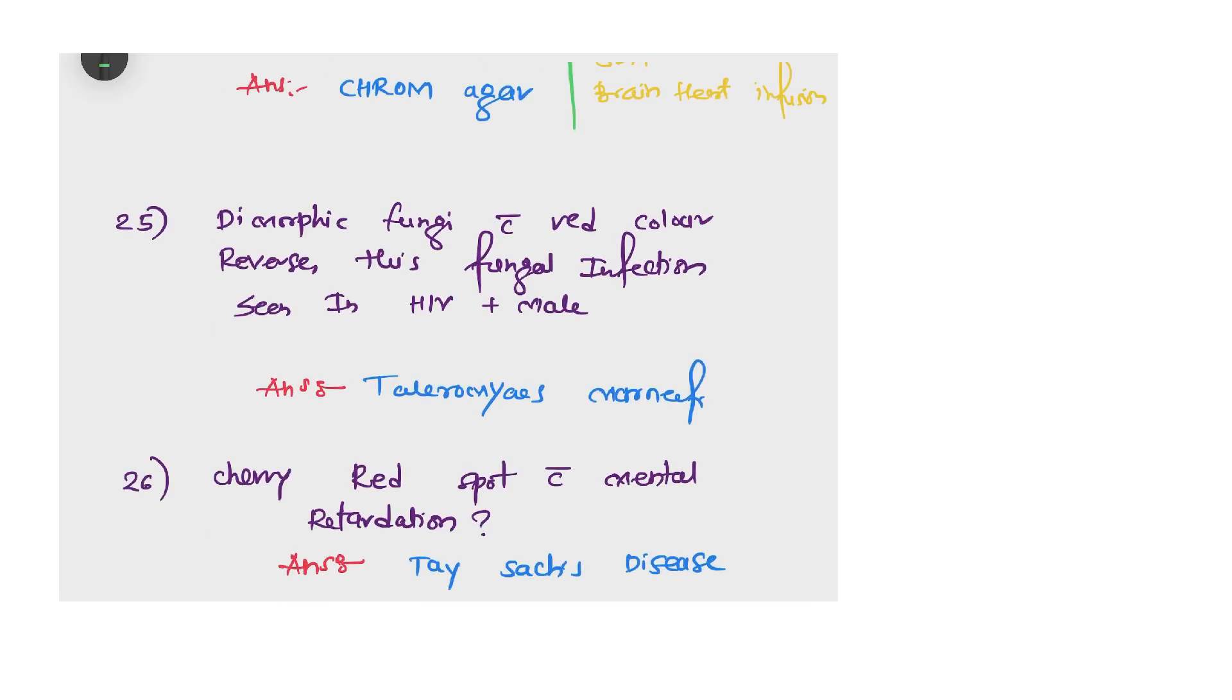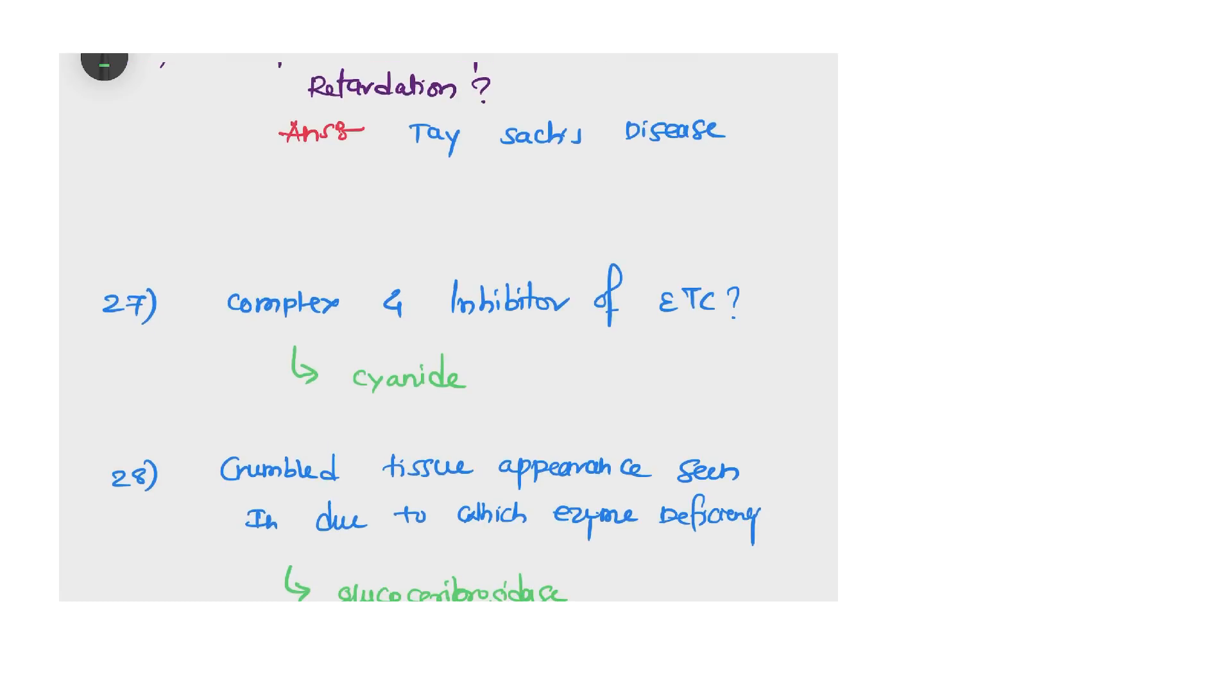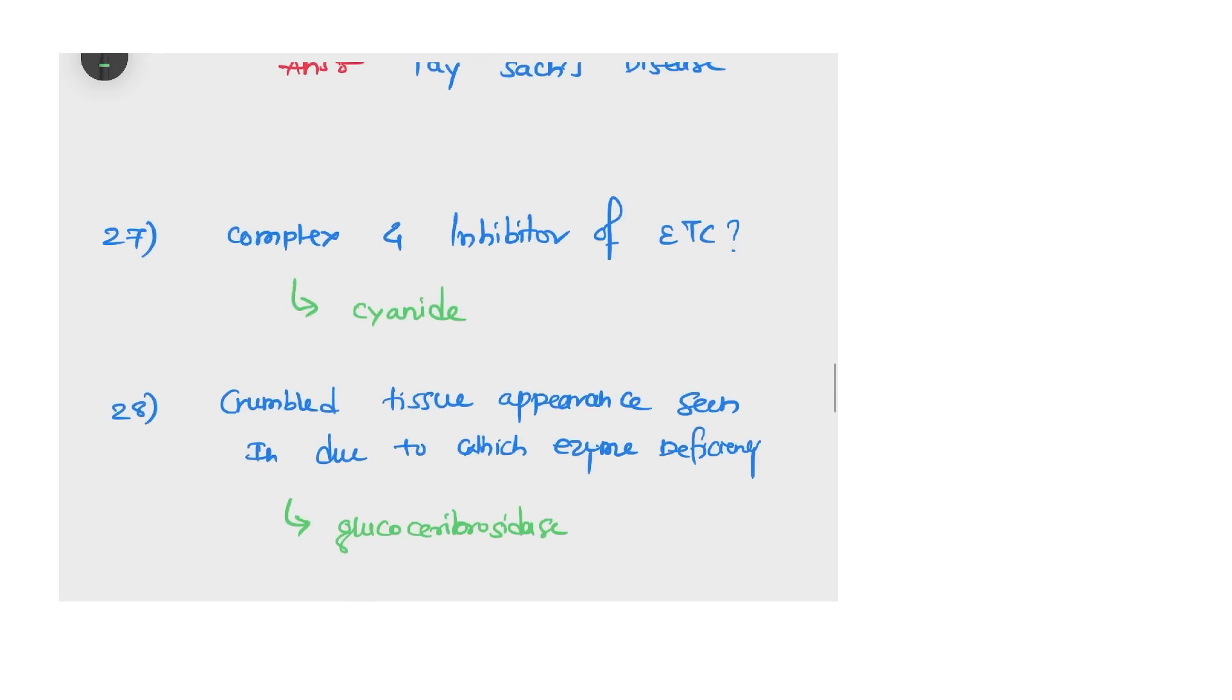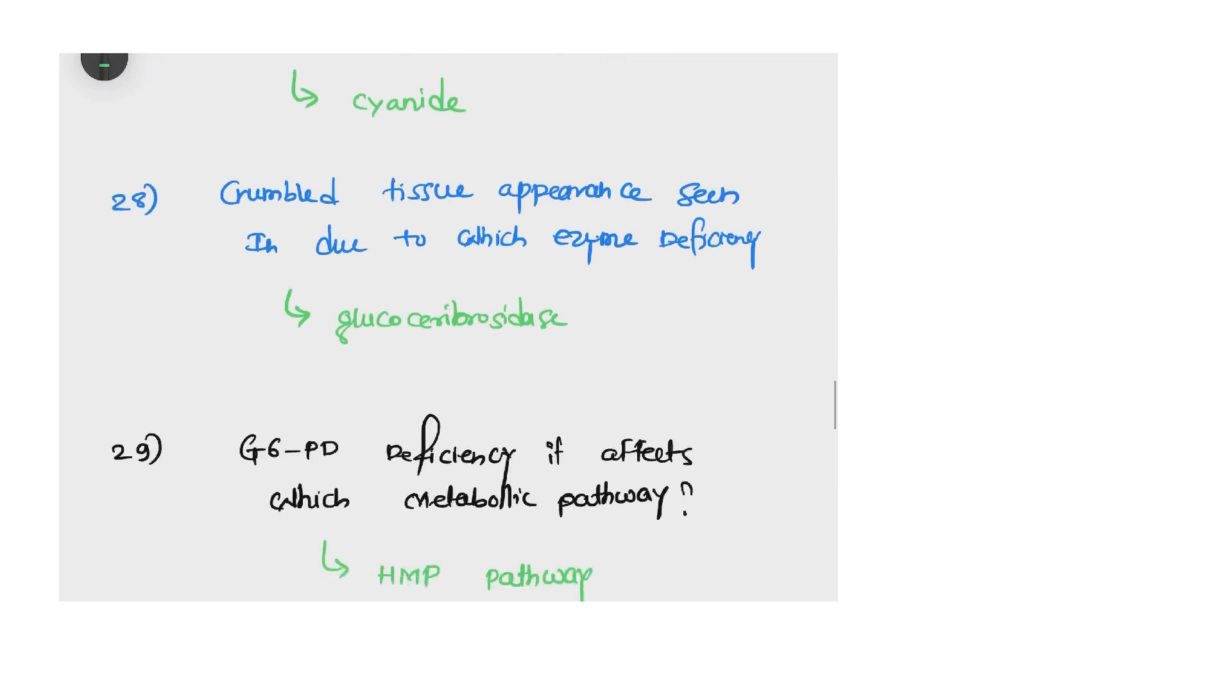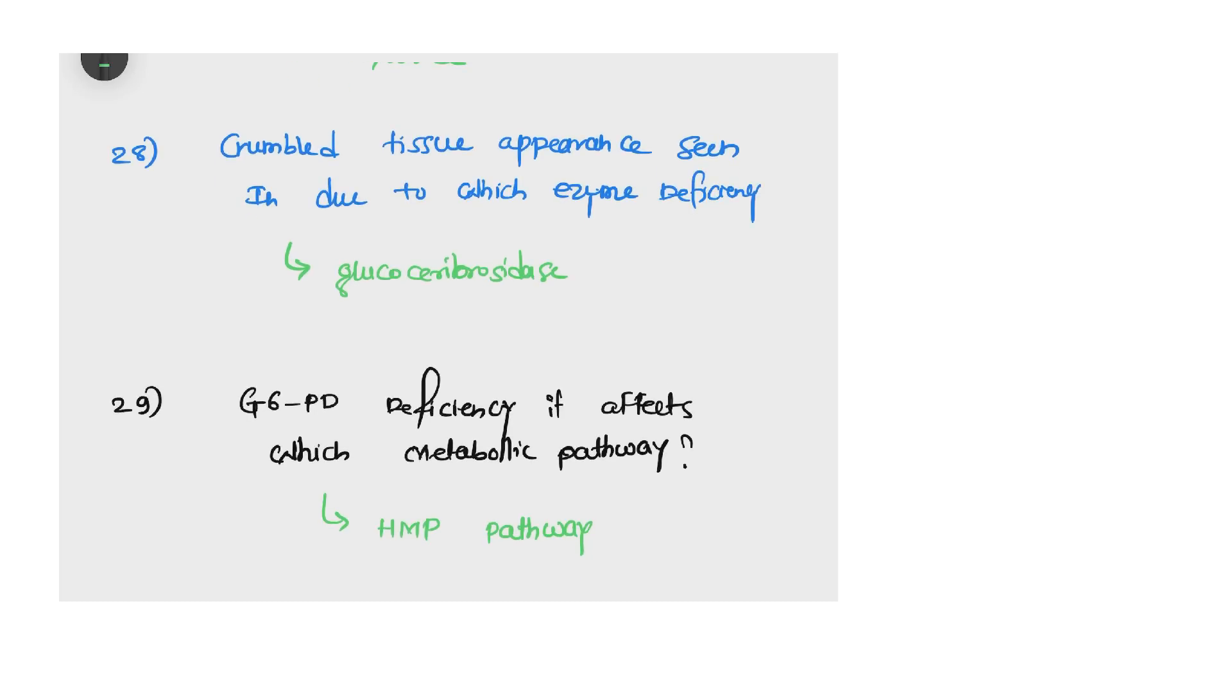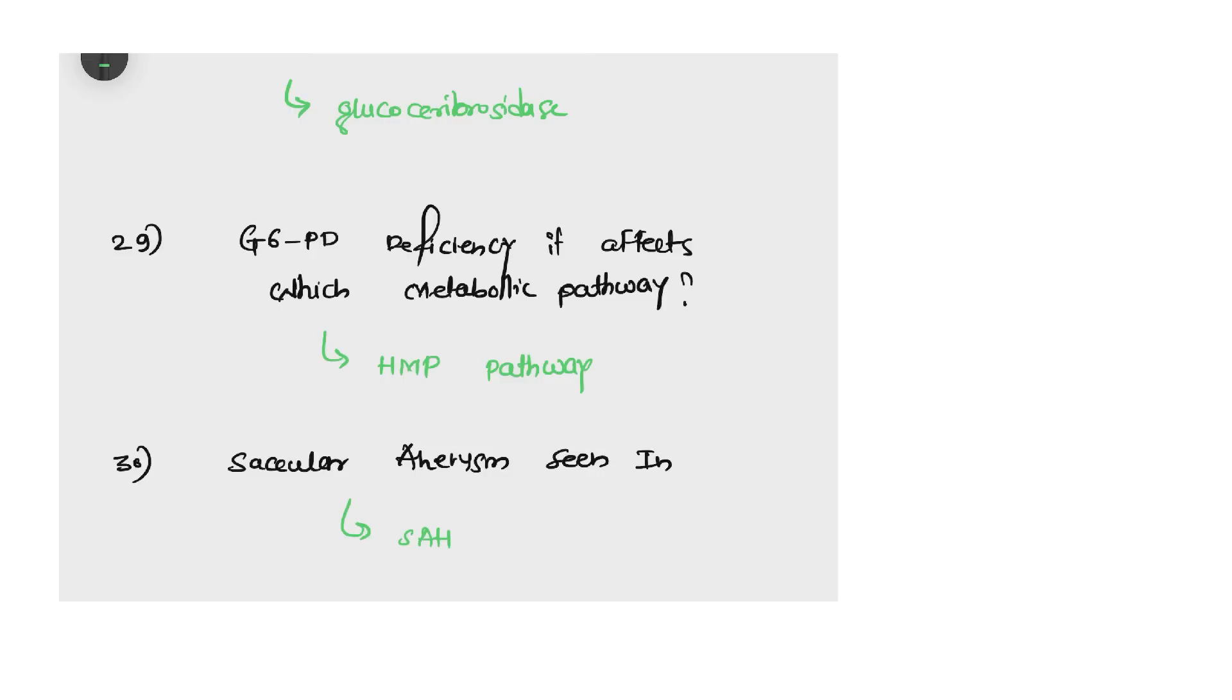Question 25: dimorphic fungi with red color yeast, this fungal infection seen in HIV-positive male. The answer is Talaromyces marneffei. Next question: cherry red spot with mental retardation. The answer is Tay-Sachs disease. Question 27: complex 4 inhibitor of ETC, that is electron transport chain - it is cyanide. Question 28: crumpled tissue appearance seen due to which enzyme deficiency? It is due to glucocerebrosidase.